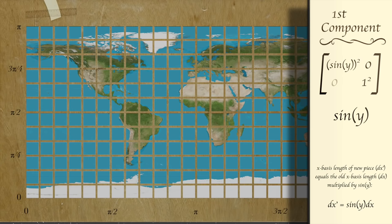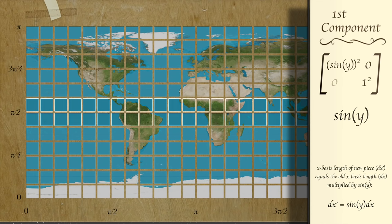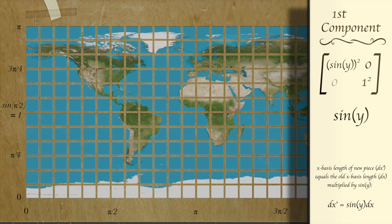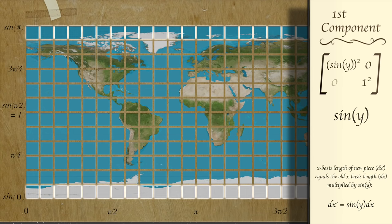So this tells us that the x length of pieces near the equator, where the sine of the y coordinate value is equal to nearly 1, will not be stretched or shrunk, whereas the x length of pieces near the poles, where the sine of the y coordinate is equal to nearly 0, will be shrunk to close to 0.